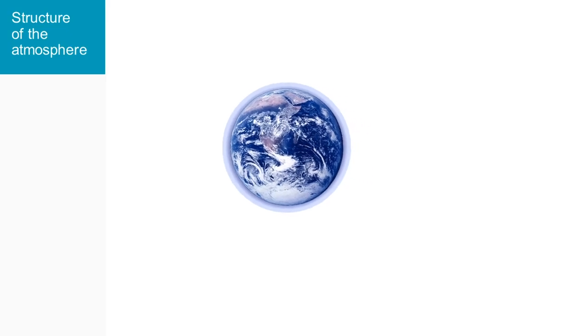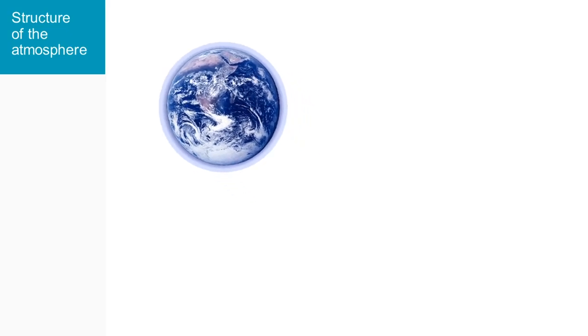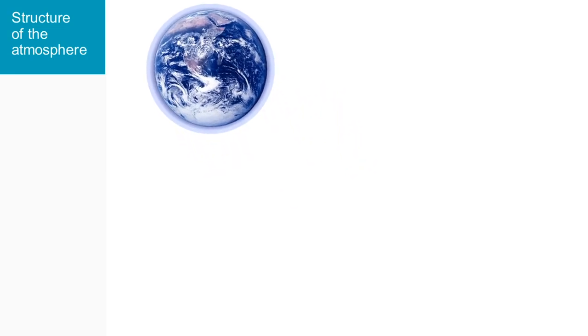Our planet is surrounded by a thin layer called the atmosphere that contains the air we breathe and is itself divided into sub-layers. It is a mixture of gases and particles which gradually phase away into space.